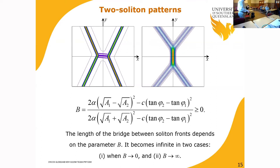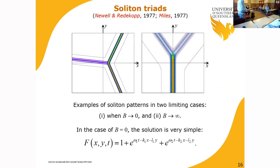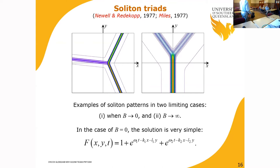When parameter B goes to zero, we obtain a pattern like that shown on the left-hand side. When B goes to infinity, we obtain a Y-type interaction — a triad of three solitary waves propagating together as a stationary pattern. In the case when B goes to zero, we obtain a solution as a linear combination of two exponential functions, very similar to the linear solution. As shown in other papers, we can also obtain three-soliton solutions containing three exponential functions, four-soliton solutions with four exponential functions — very interesting solutions.